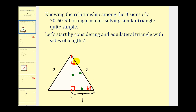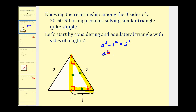The hypotenuse would be two, and this leg here would now have length one, since this red segment bisected this side of the triangle. So now what we're going to do is take this right triangle and find the length of this missing leg. We'll call this side a, this side b, and this side c. Using the Pythagorean Theorem, we'd have a squared plus one squared must equal two squared. So we have a squared plus one equals four, a squared equals three. Taking the square root of both sides, we have a equals the square root of three.